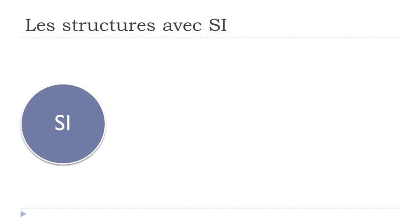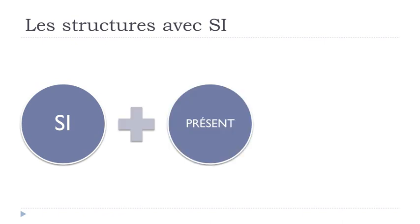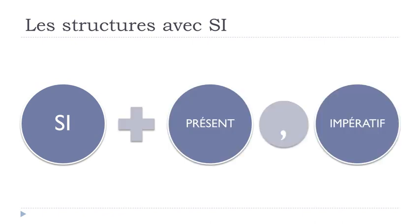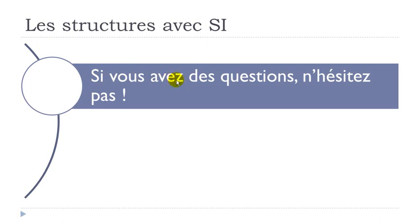We have a second possibility to express this idea: SI plus LE PRÉSENT, followed by L'IMPÉRATIF. First example: SI VOUS AVEZ DES QUESTIONS, N'HÉSITEZ PAS. AVOIR is to have — if you have some questions, don't hesitate. You can see: SI, then the present form, followed by L'IMPÉRATIF.